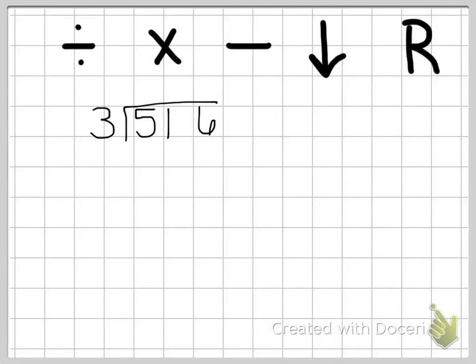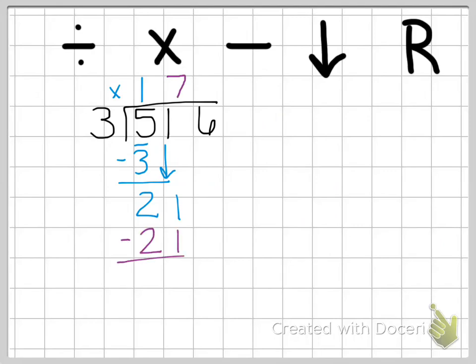Last one: 516 divided by three. Five divided by three — three goes into five one time. Three times one is three. Five minus three is two. Bring down the one. Then we repeat our steps. Three goes into 21 — well, three times seven is 21. We subtract and get zero. Now make sure you pay attention: you're not done because you still have a digit up here that needs to be brought down.